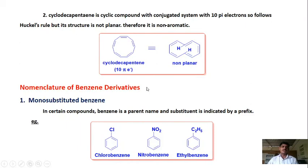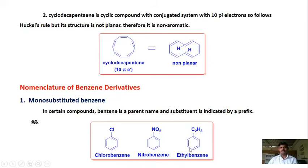Now, nomenclature of benzene derivatives. Nomenclature can be given in three types. Mono-substituted benzene is where one hydrogen of the aromatic ring is substituted by another group. When chlorine is present, it is chlorobenzene; when a nitro group is present, it is nitrobenzene; when a C2H5 group is present, it is ethylbenzene.